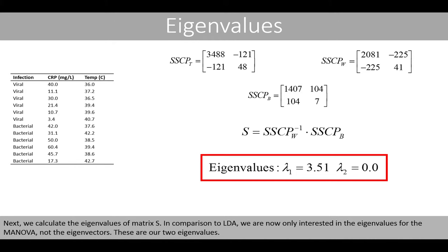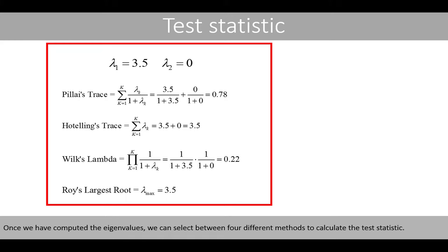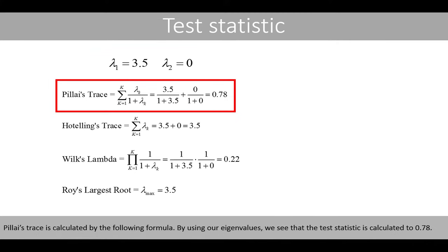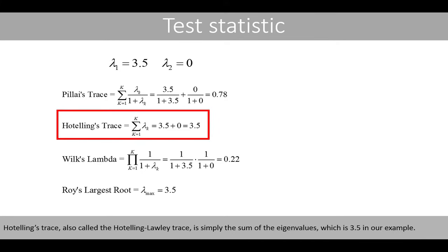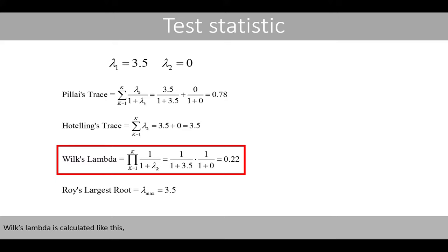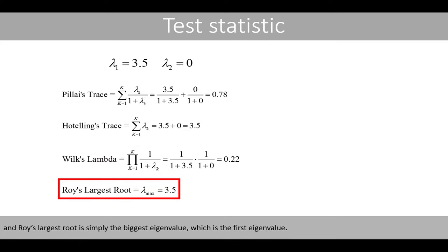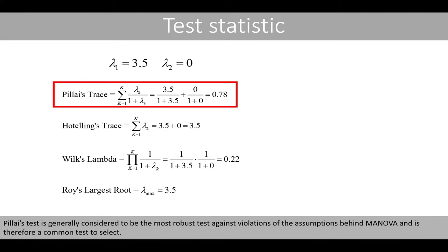These are our two eigenvalues. Once we have computed the eigenvalues, we can select between four different methods to calculate the test statistic. Pillai's trace is calculated by a specific formula — using our eigenvalues, the test statistic is 0.78. Hotelling's trace, also called Hotelling's lawless trace, is simply the sum of the eigenvalues, which is 3.5 in our example. Wilks' lambda is calculated by another formula, and Roy's largest root is simply the biggest eigenvalue. Pillai's test is generally considered to be the most robust test against violations of the MANOVA assumptions and is therefore a common test to select. Once the test statistic has been selected, one can compute the F statistic and p-value, though those calculations are not shown here.